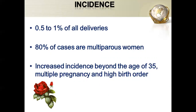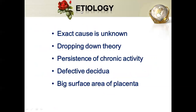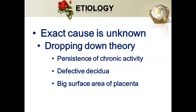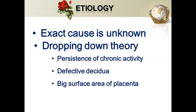The exact etiology is unknown, but some theories explain the reasons behind placenta previa. The first is the dropping down theory — during implantation, if the placenta is not implanted properly in the upper uterine segment, it falls down and develops in the lower uterine segment. That is the dropping down theory.